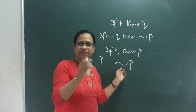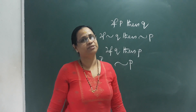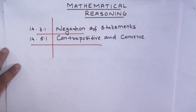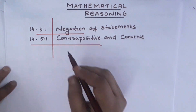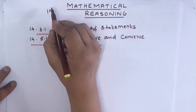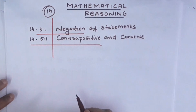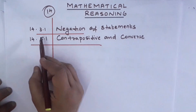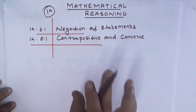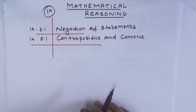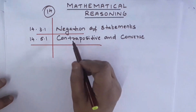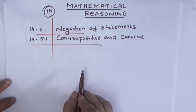In this chapter, there are a few questions and I will select the questions. In the next chapter, Mathematical Reasoning — Chapter 14 — focus area 3.1 and 5.1. We can see two topics. The first is Negation.